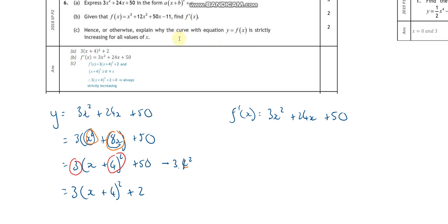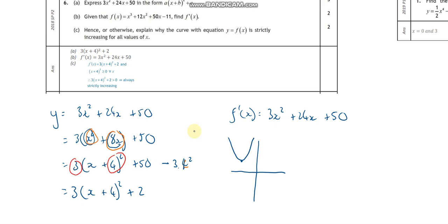Then it says 'hence or otherwise explain why the curve is increasing.' When it says 'hence or otherwise' it's saying look at what we've just done. We've shown that the differential of this function is 6x plus 24, and we've shown you can rewrite that in completed square form. The question is trying to get us to think about and visualize the curve. Where is the turning point? The turning point - the sign stays the same - is at negative 4 plus 2, so it's over there. It's a positive x squared so it's a happy face. This is dy/dx, this is x, and that is what this function looks like. That's why we complete the square - to get the turning point.